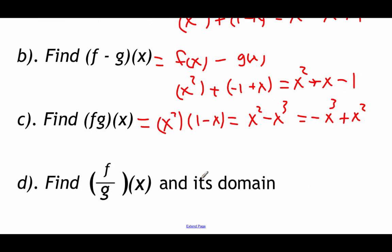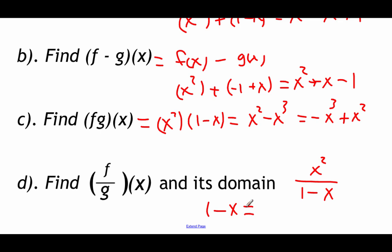With division we have to worry about the domain because now we're dealing with a fraction. We take f(x) over g(x), so x² on top and (1 − x) on the bottom. It looks like one of those rational function situations. We take the denominator, 1 − x, and make sure it can't be zero. Adding x to the other side, our domain tells us x cannot equal 1 — any other number works, but plugging in 1 gives zero on the bottom.